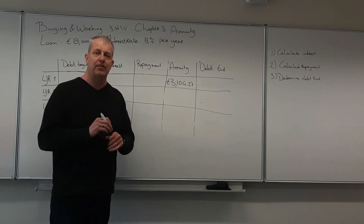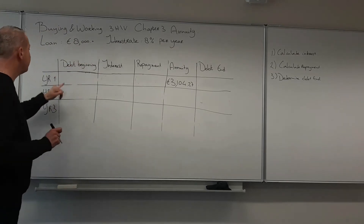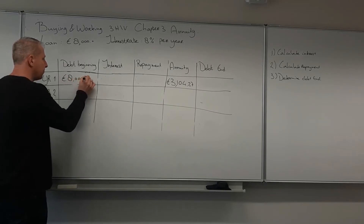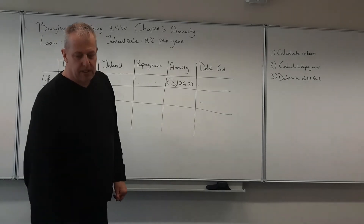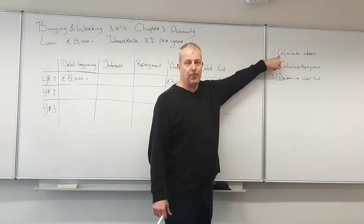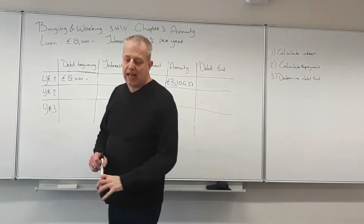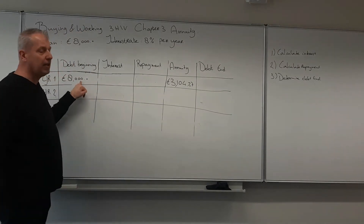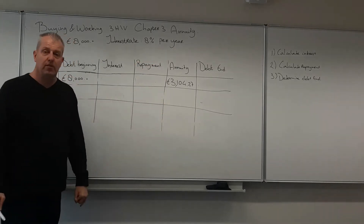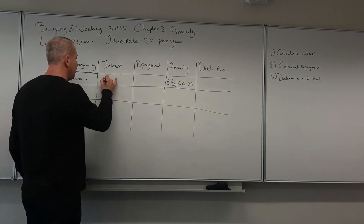The first thing you have to do is determine the height of the loan. In this case the loan is 8,000 euros, so you fill this in as the debt at the beginning of the first year: 8,000 euros. The first step you take every year is to calculate the interest. You take the debt at the beginning of the year and multiply by the interest rate. So 8,000 euros multiplied by 8% gives us 640 euros.